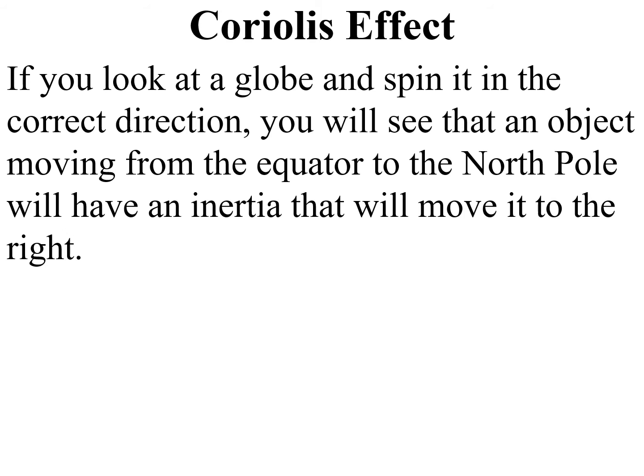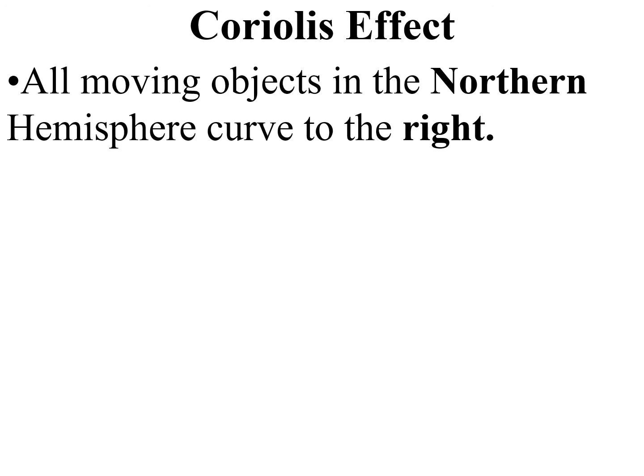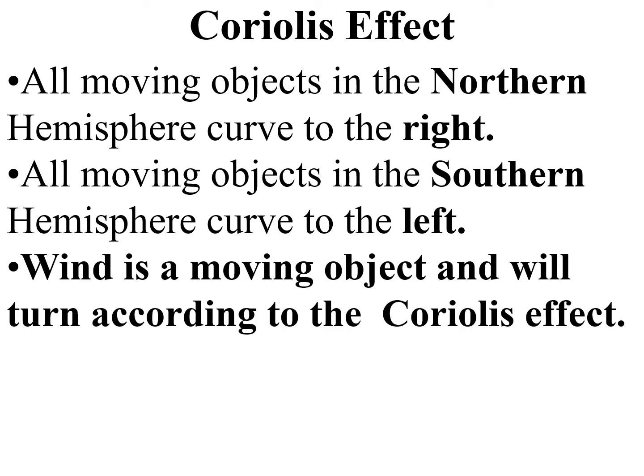If you look at a globe and spin it in the correct direction — that's to the right as you're facing it — you'll see that an object moving from the equator to the north pole will have that inertia and continue moving to the right. It's moving very fast at the equator and the land underneath it is not moving as fast as you go away from the equator, so it'll maintain that real speed and curve to the right. An object moving from the north pole to the equator will lack inertia and also curve to the right. All moving objects in the northern hemisphere curve to the right; all moving objects in the southern hemisphere curve to the left.